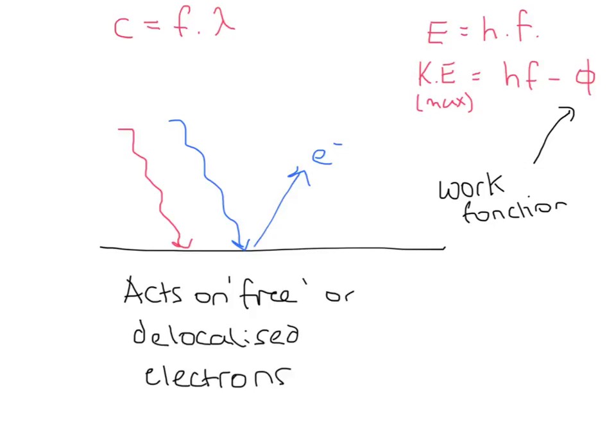Okay, so a couple of basic equations that you should already know. The speed of light is equal to the frequency times the wavelength, so that's one you should know already, and E equals HF, so the energy of a photon is equal to Planck's constant times the frequency of that photon.